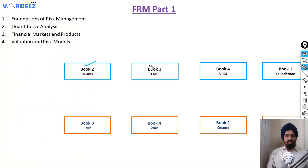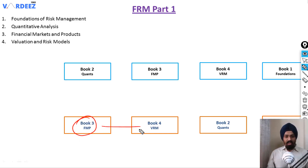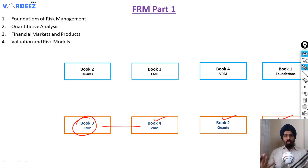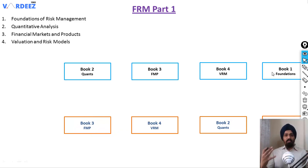To sum it up: start with Book 2, then Book 1 chapters 5 and 6, then Books 3 and 4 (simultaneously or sequentially), and finally the remaining chapters of Book 1. Or if you want to start with Book 3, you can combine approaches — whatever works for you. I hope this video has been helpful. Thank you so much for your time and have a good day.